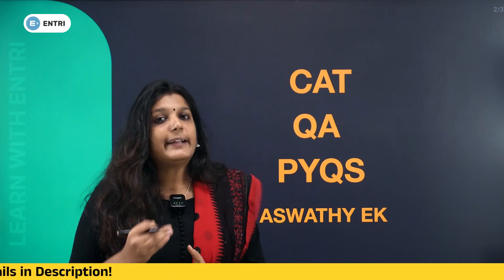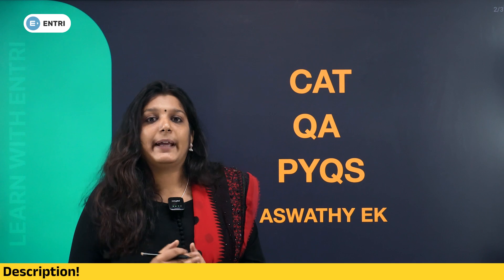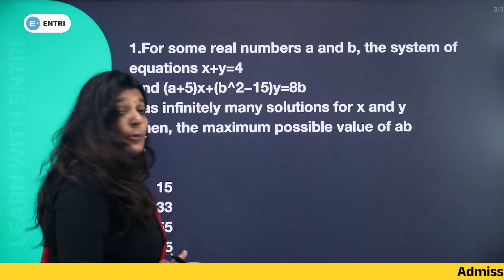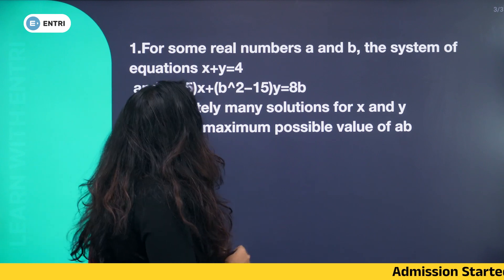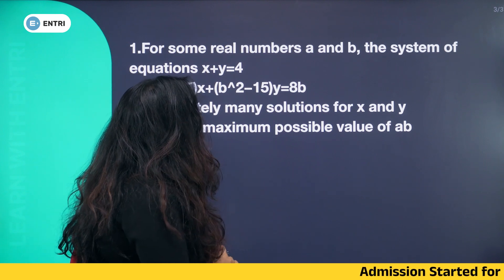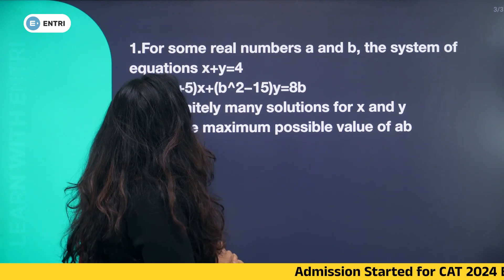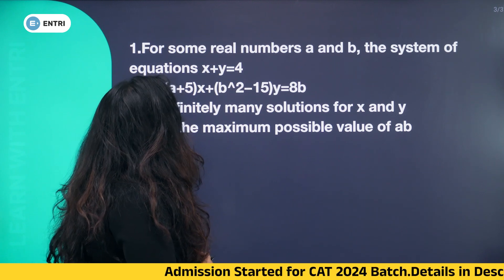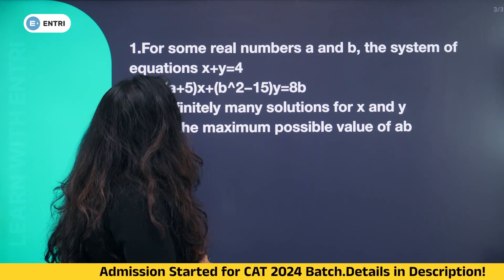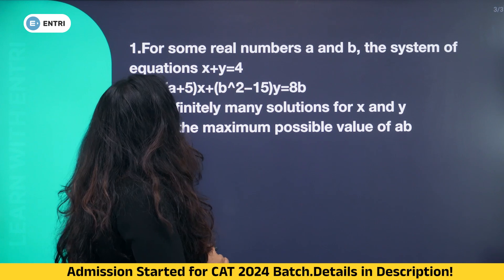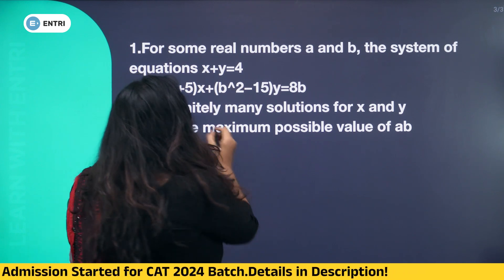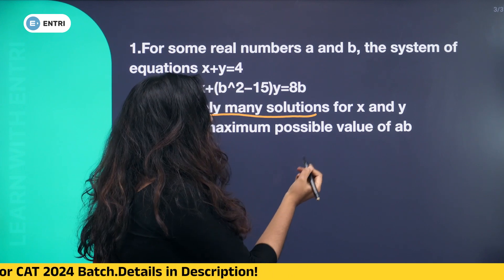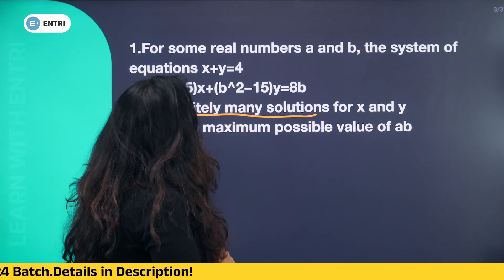We will solve some questions in this class. Let's go to question number 1. For some real numbers a and b, the system of equations: x plus y equals 4, and (a+5)x plus (b²-5)y equals 8, has infinitely many solutions. We need to find the maximum possible value of a plus b.